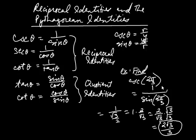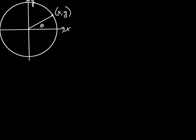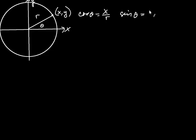There are a few more identities called the Pythagorean identities. If you have an angle where the point has coordinates x, y and radius r, then cosine of the angle is x/r and sine is y/r. Multiplying both sides by r gives x = r·cosine θ and y = r·sine θ.